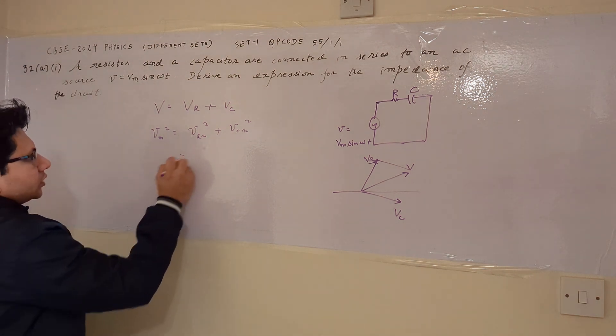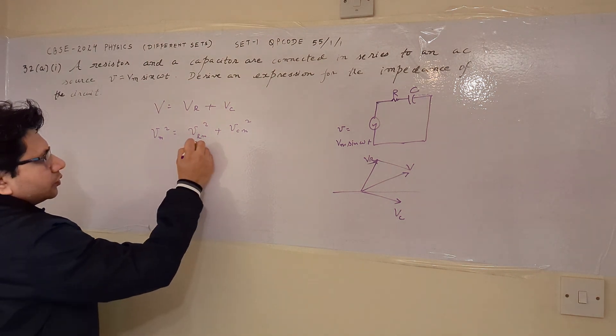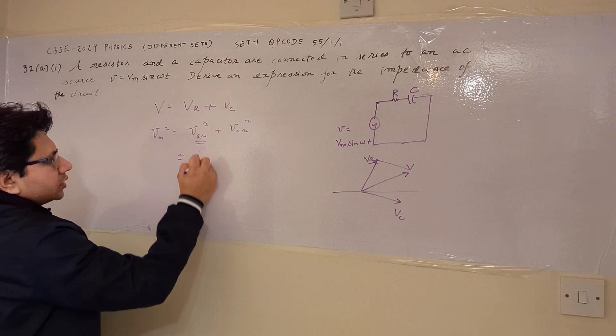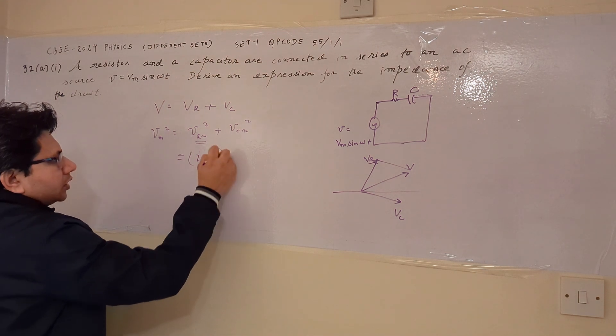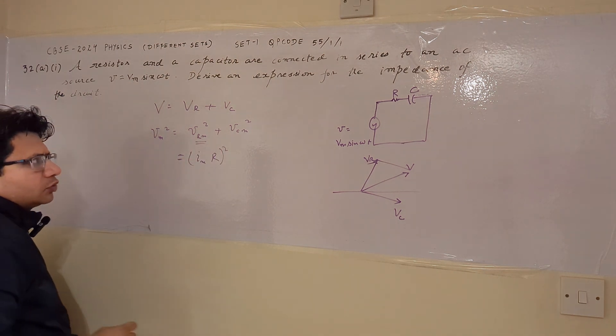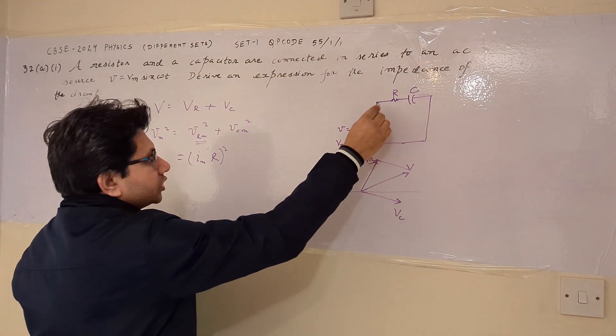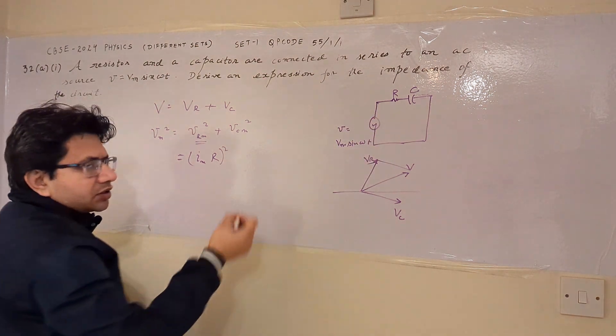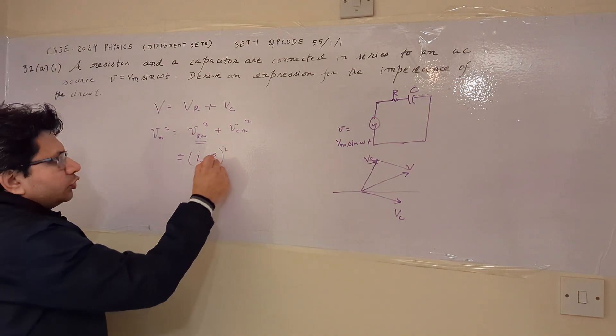Now we know that for the resistor, this is Im R and its whole square. The voltage across the resistor according to Ohm's law is given by the current passing through times the value of the resistance.